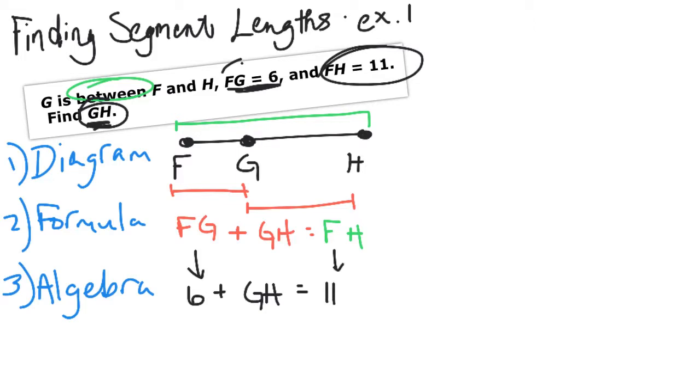Cool. We've substituted and we can do some more algebra. We could figure out what GH is by subtracting 6 on both sides. So GH equals, and 11 minus 6 is totally 5. Boom.